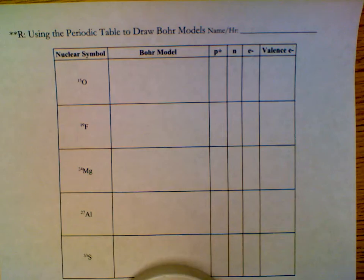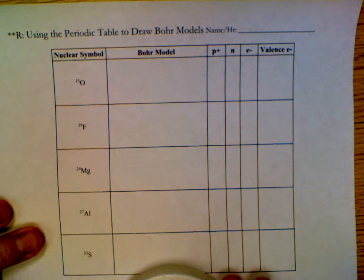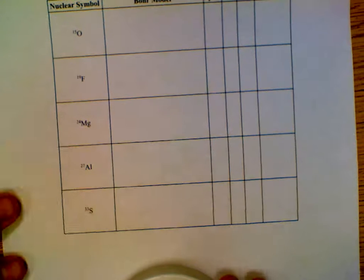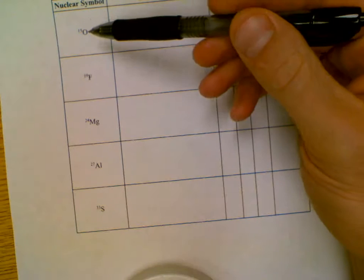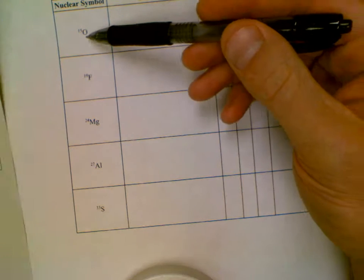This is the answer key for using the periodic table to draw Bohr models. To start this sheet out, I want us to look at the symbols that are provided to us and add the atomic number to each of these.